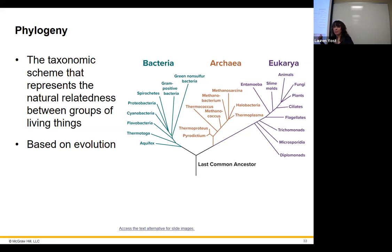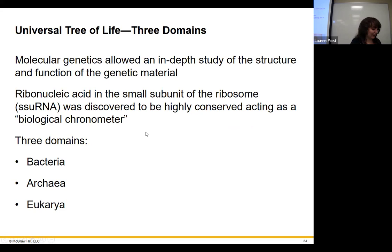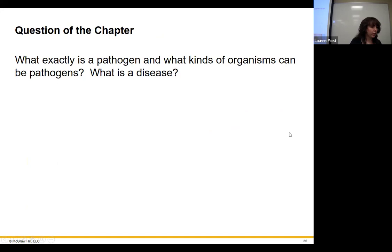Phylogeny separates organisms based on their DNA. Every living cell has ribosomes — the machinery that makes proteins — so we can compare ribosomes across all organisms to build a phylogenetic tree. The domains reflect similarities in ribosomal RNA. That's it for chapter one.